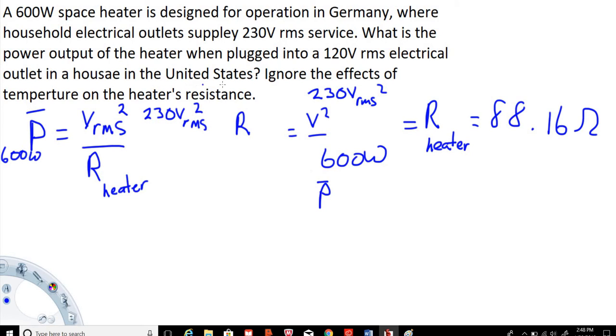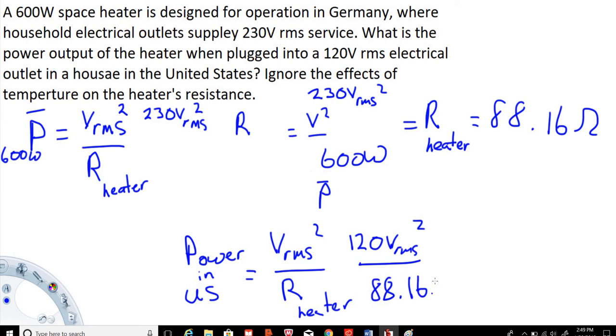in a household in the United States? So we're looking for power in the U.S., and that equals, like we have up here, voltage RMS squared divided by the equivalent resistance of the heater. Since we're in the U.S. now, it's going to be 120 volts RMS squared divided by the resistance of the heater, which is 88.16 ohms.